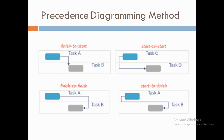The other format is the Precedence Diagram Method (PDM), which is more popular than ADM and shows activities as boxes, using arrows to show relationships between them. The four task dependencies in PDM are: finish-to-start, where task B must start only after task A has finished; start-to-start, where task D must start only after task C has started; finish-to-finish, where task B must finish only after task A has finished; and start-to-finish, where task B can finish only after task A has started.